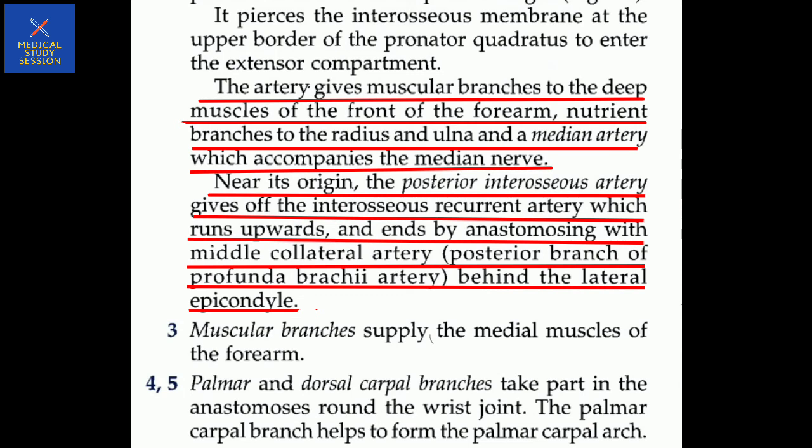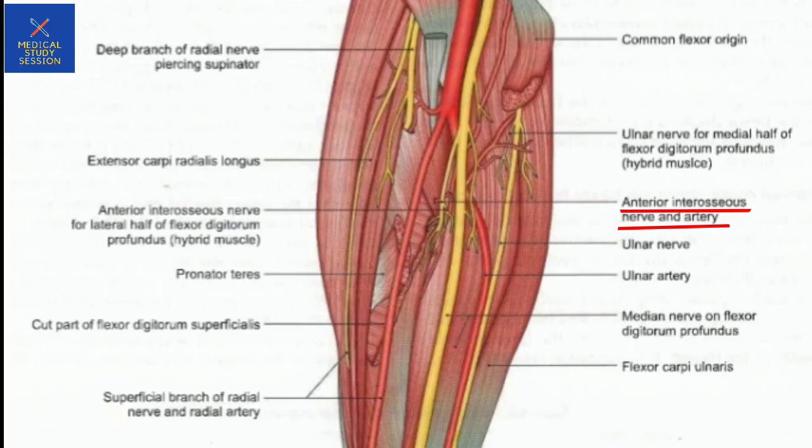The anterior interosseous artery gives muscular branches to the deep muscles of the front of the forearm, nutrient branches to the radius and ulna, and a median artery. It also gives off a branch that contains the posterior interosseous artery near its origin. The posterior interosseous artery gives off the interosseous recurrent artery, which runs upward and anastomoses with the middle collateral artery and the posterior branch of the profunda brachii artery behind the lateral epicondyle.